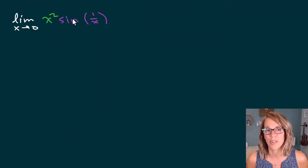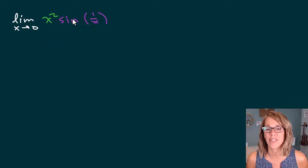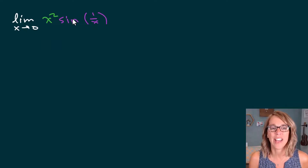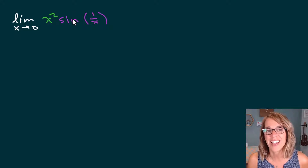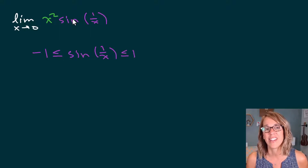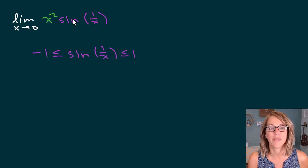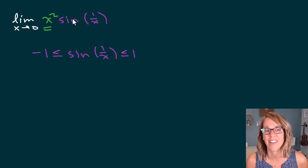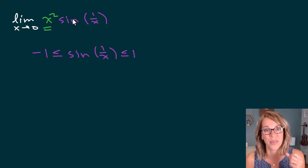In this example I have the limit as x approaches zero of x squared sine of one over x. I don't need a graph for this one. I'm going to rely on the fact that all sine and cosine functions live between negative one and one — they oscillate, so they are automatically sandwiched between negative one and one. I can take this statement and multiply in what I have left. This is the pattern you're going to use, and it makes these squeeze theorem problems so easy.